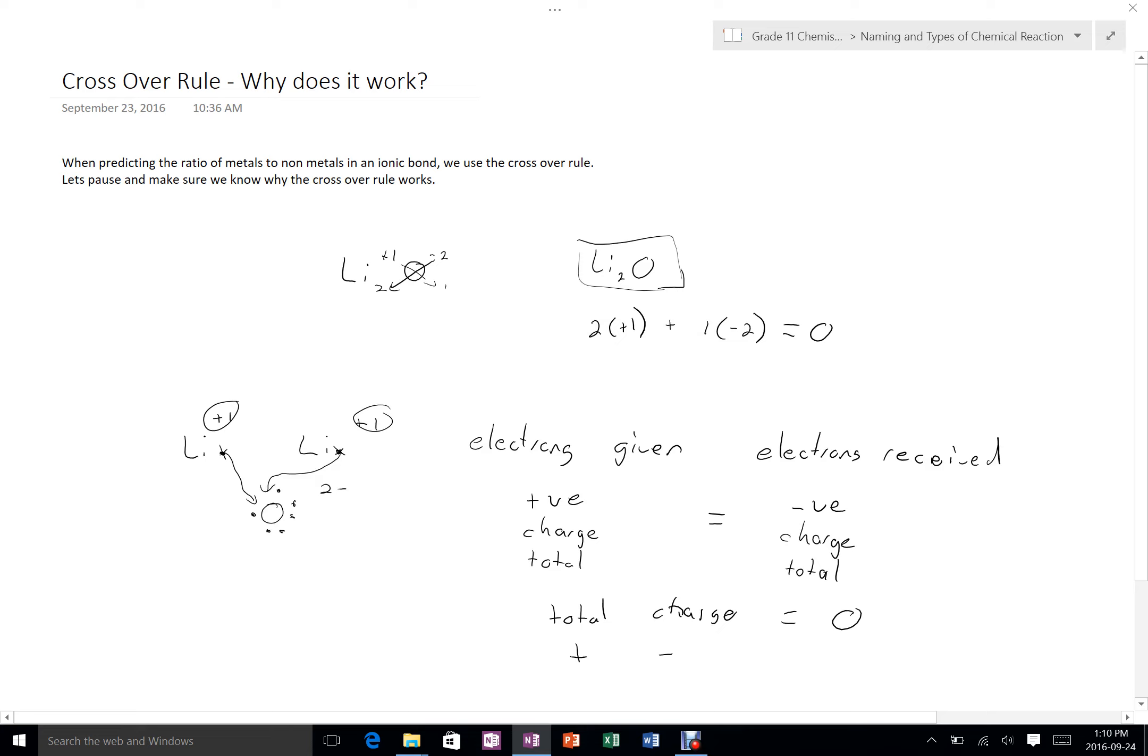Now let's see what happened there though. The original charge on lithium was plus 1, and the original charge on oxygen was minus 2. So this minus 2 came over and predicted the number of lithiums that would be required to keep the total molecule neutral. And this plus 1 came over and predicted the number of oxygen molecules that would be required to keep the molecule neutral.